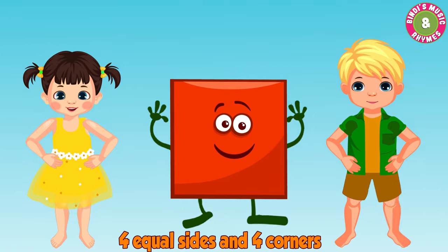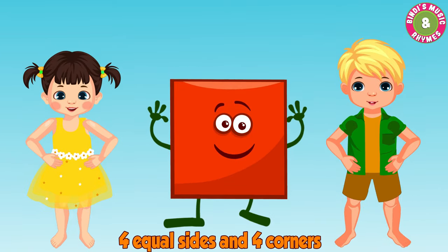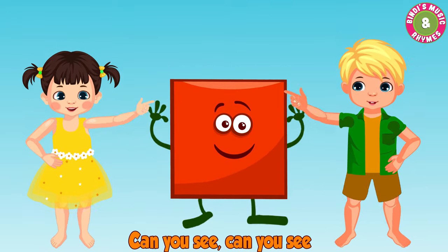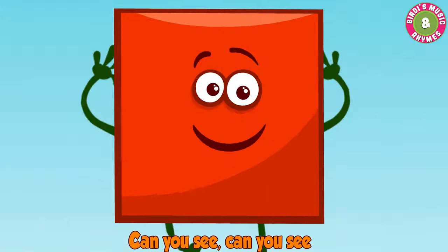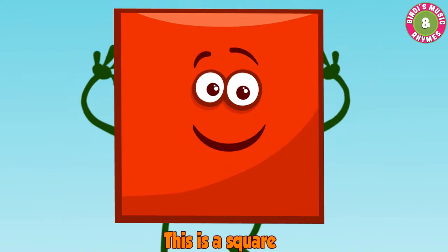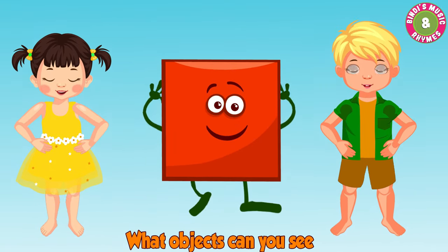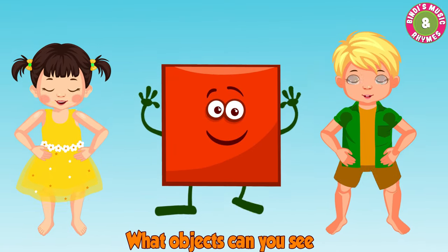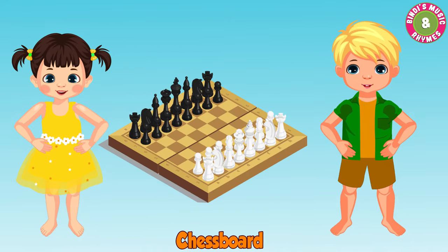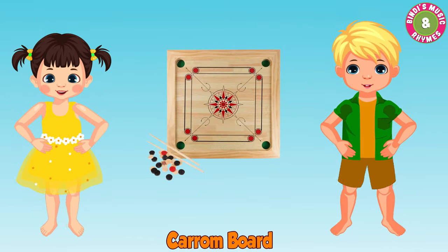Four equal sides and four corners, can you see? This is a square. What objects can you see? Window, chessboard, crackers, dice, carom board.